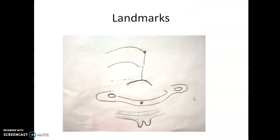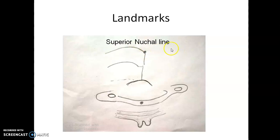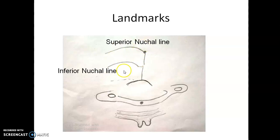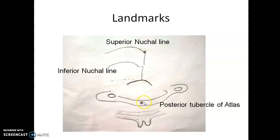Coming to the landmarks needed to gain access to the suboccipital triangle: this is the external occipital protuberance on the posterior surface of the skull. At that level there is a line called the superior nuchal line on either side. Parallel to that is the inferior nuchal line. This entire region is the occipital bone, and this is the posterior margin of the foramen magnum. This is the atlas vertebra, showing the posterior arch and posterior tubercle of the atlas.